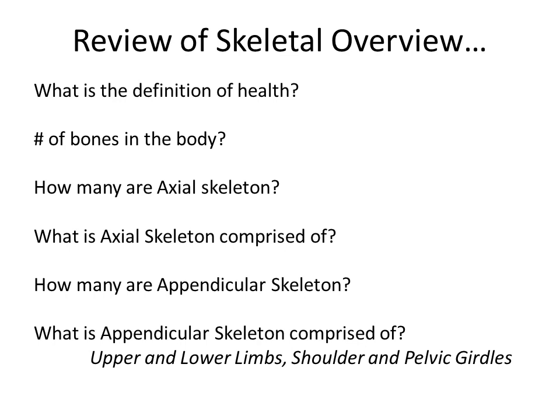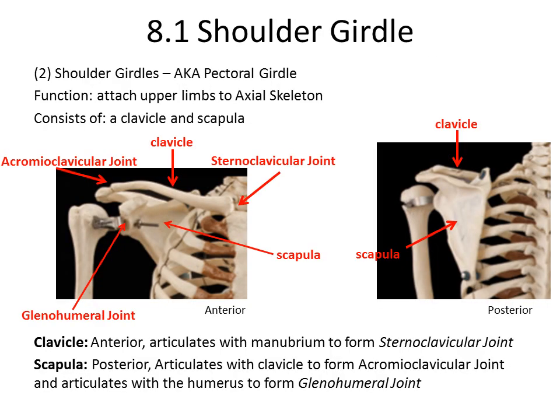Before we begin, let's review a few important key concepts of the skeletal system. First, the definition of health is the ability to function at 100% mentally, physically, and socially. The importance of the spine is that it houses the spinal column, which is the brain's way to send messages to every single organ, tissue, muscle, and cell in the body. We have 206 bones in the body, 60 of which are part of the axial skeleton, which is comprised of structures along our midline such as the skull, facial bones, vertebral column, and ribcage. The appendicular skeleton is comprised of our upper and lower limbs as well as the shoulder and pelvic girdles.